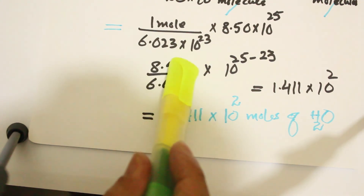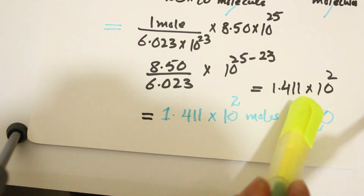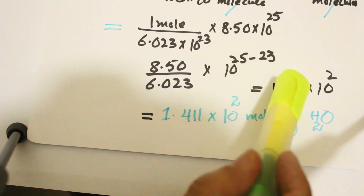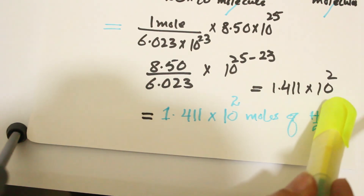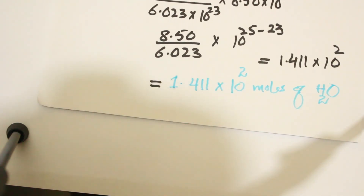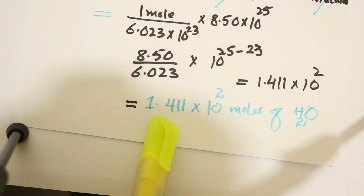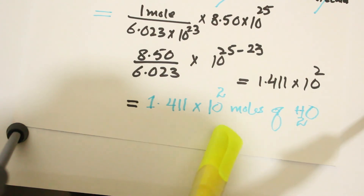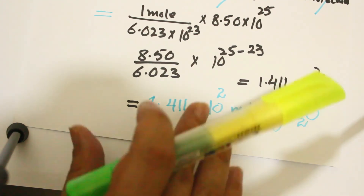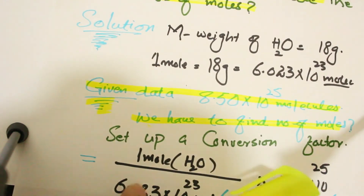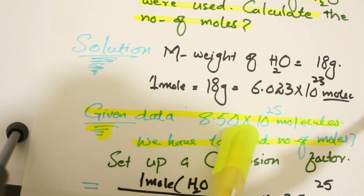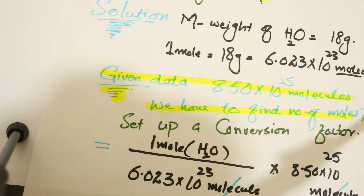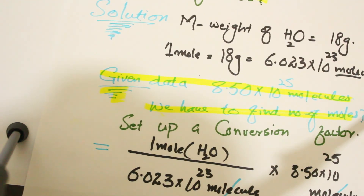When we divide 8.50 by 6.023 we get 1.411, and subtracting 23 from 25 gives 10 raised to the power 2. So the answer is 1.411 × 10² moles of water. This number of molecules — 8.50 × 10²⁵ — contains 1.411 × 10² moles of water.